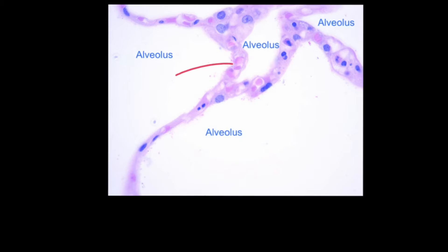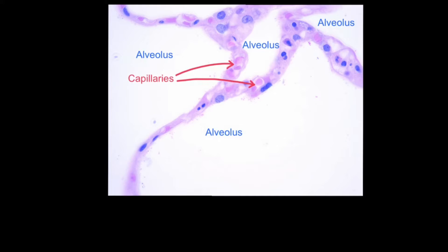Pneumocytes are cells lining the alveoli, otherwise known as alveolar cells, and around the alveoli we also find a network of capillaries. This is because in the alveoli, gas exchange occurs.